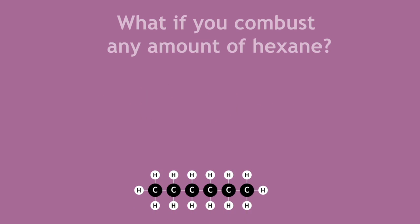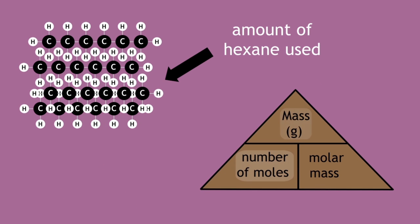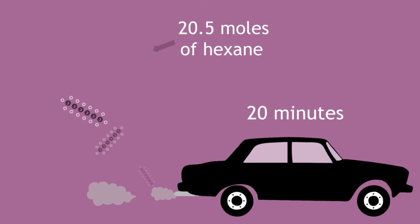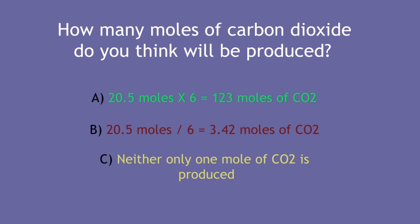However, what if you combust any amount of hexane? The amount of hexane used in mass and moles will vary according to how long the car is used. Let's say that you use the car for 20 minutes, and it combusts 20.5 moles of hexane. How many moles of carbon dioxide do you think will be produced?